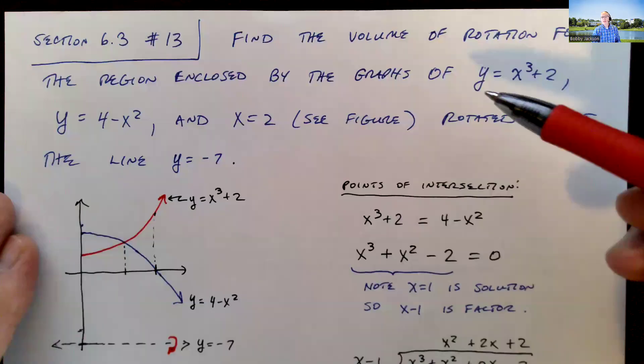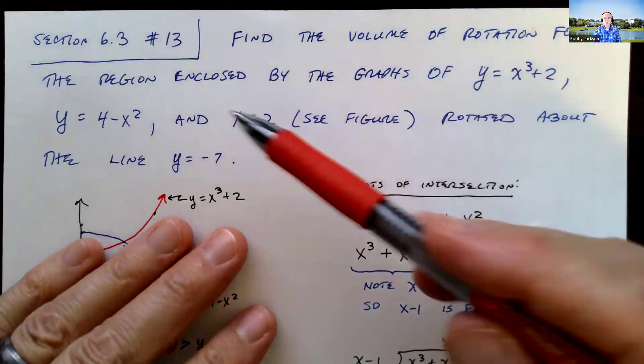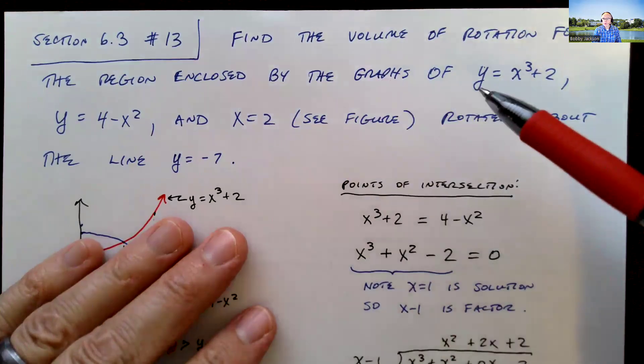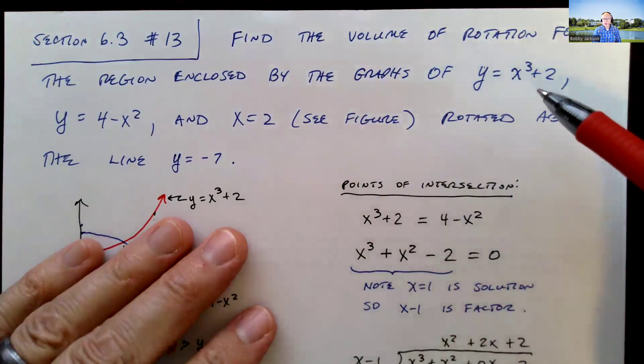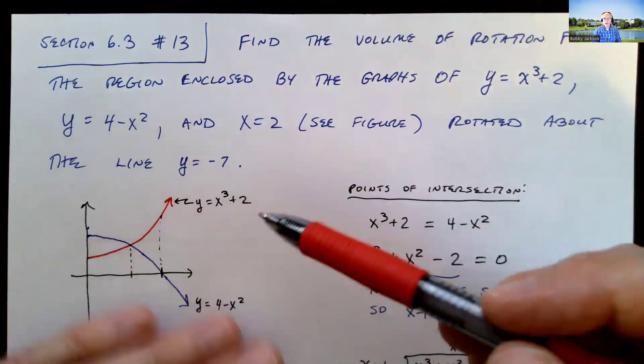Hey everyone, let's take a look at number 13 in section 6.3. We're going to find the volume of rotation for the region enclosed by the following graphs: y equals x cubed plus 2, y equals 4 minus x squared, and x equal 2.